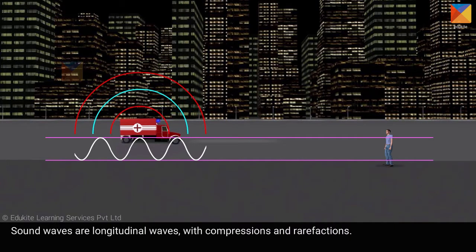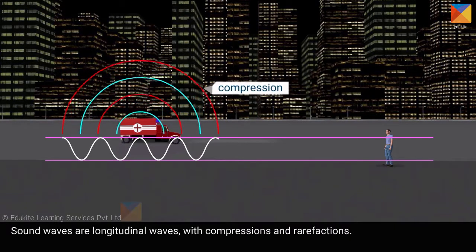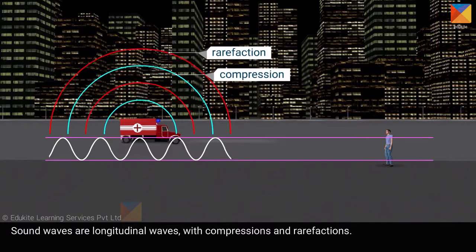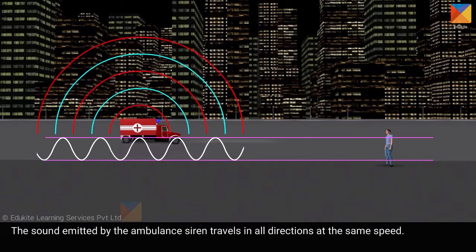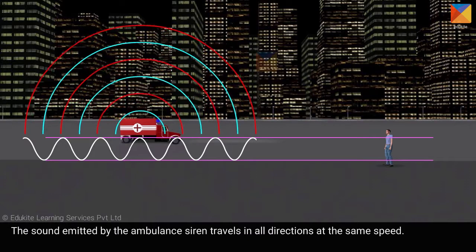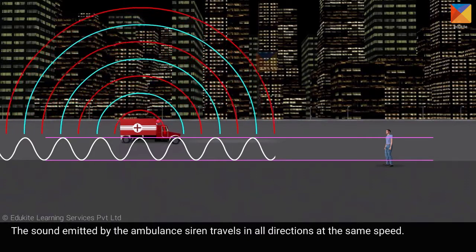Sound waves are longitudinal waves with compressions and rarefactions. The sound emitted by the ambulance siren travels in all directions at the same speed.